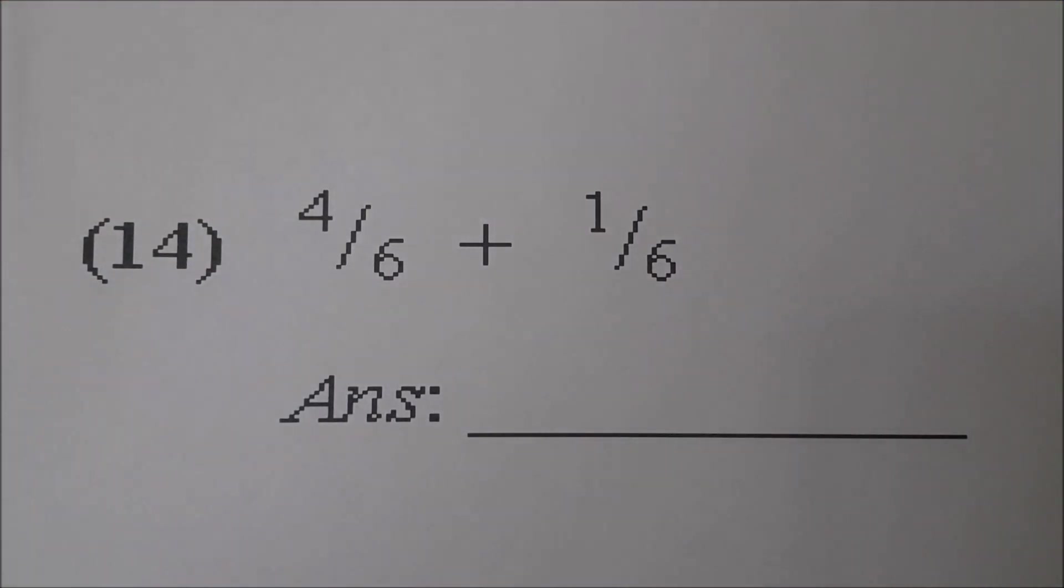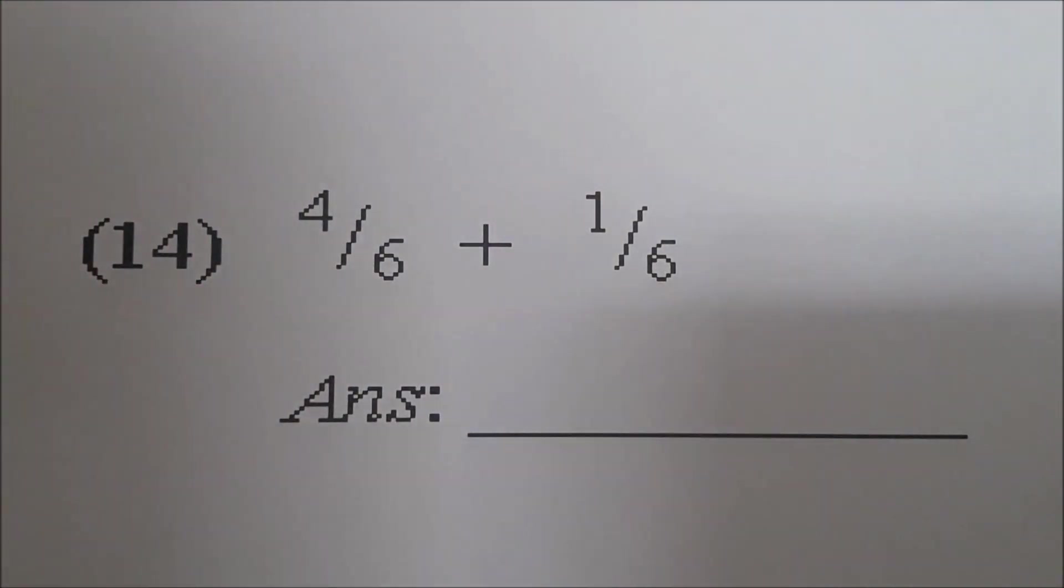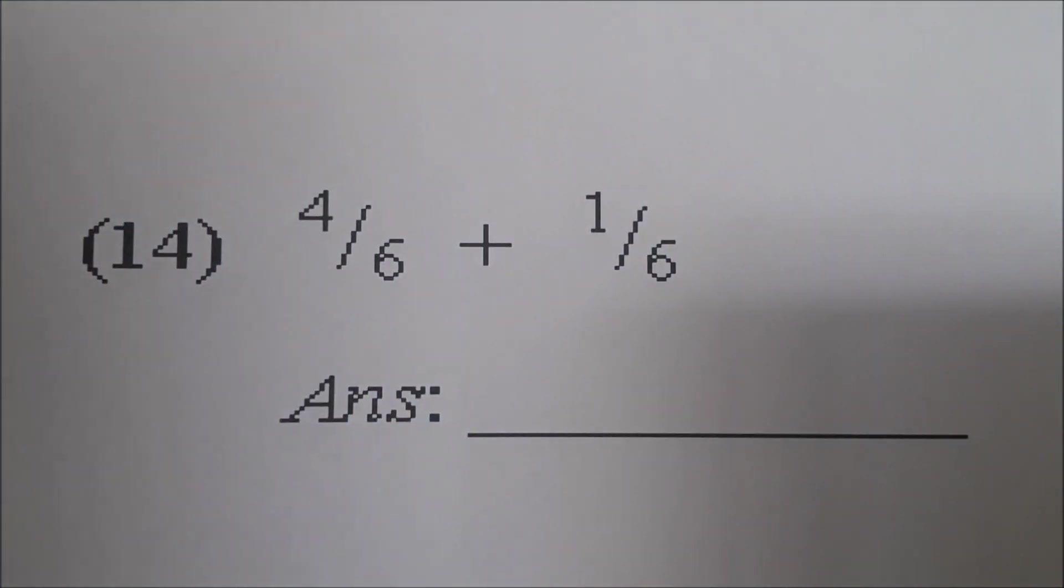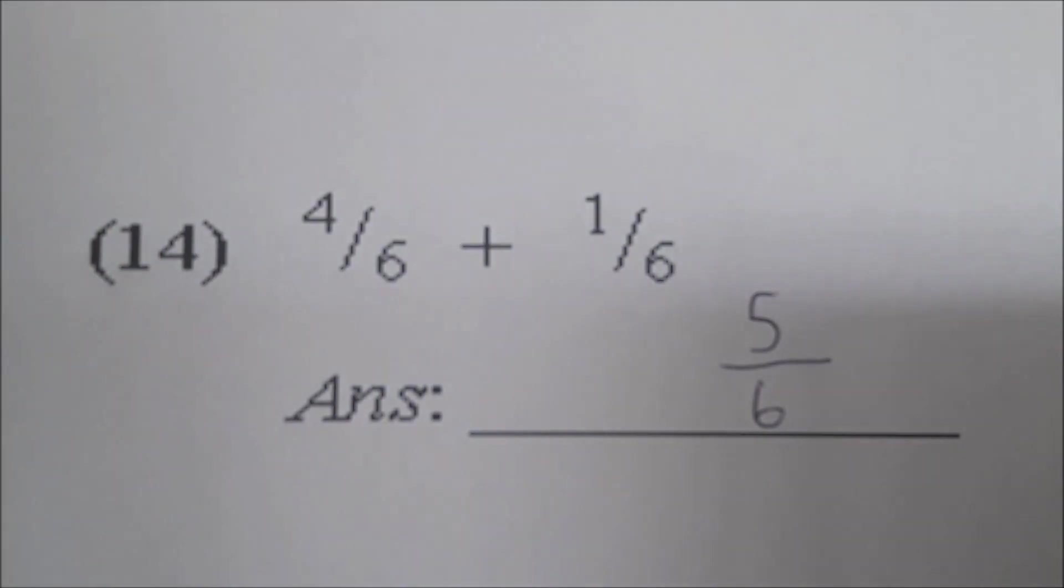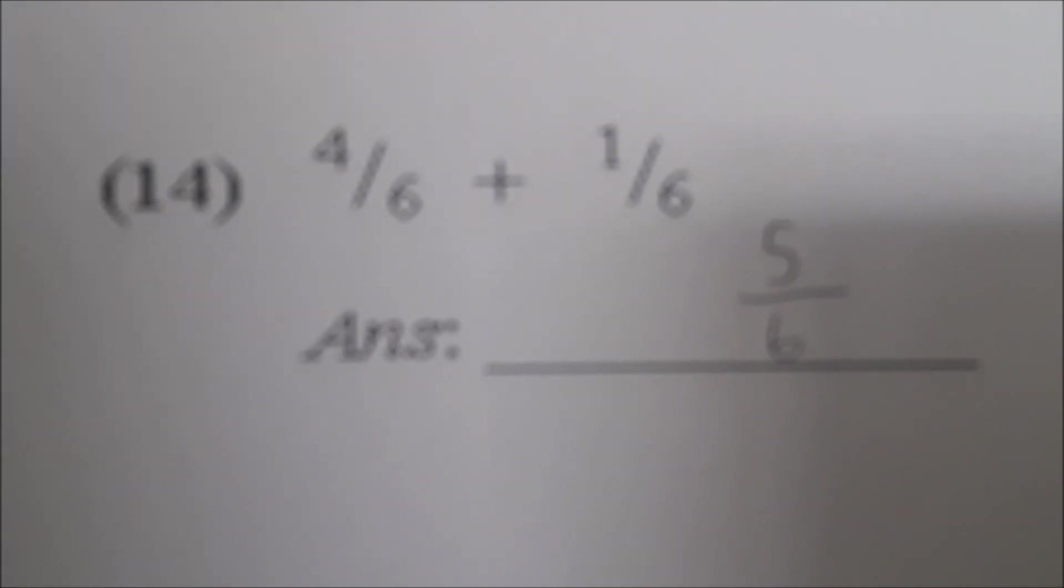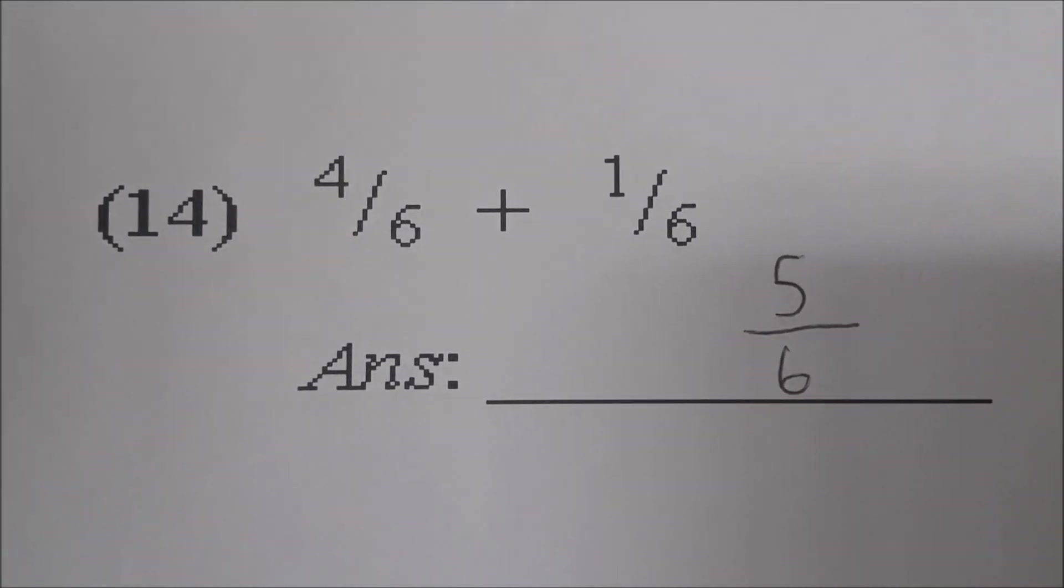Number fourteen. Read it, Sky. Four-sixths plus one-sixth. Very good. Go ahead and work it. Answer. Five over six. Five-sixths. Very good, Sky Bryce. Four over six plus one over six. So you add your numerators. Four plus one is five. And you leave your answer with a six on the bottom of it. The denominator. Because you're adding sixths. Very good.